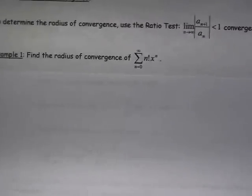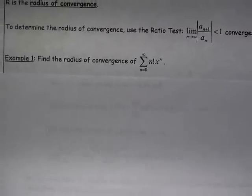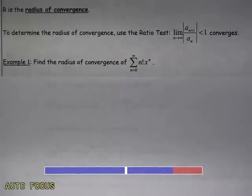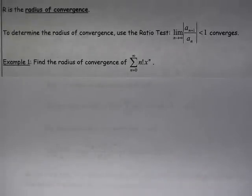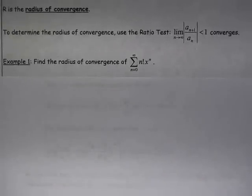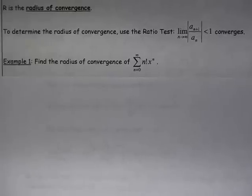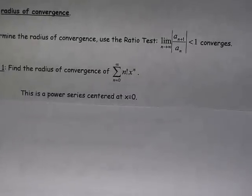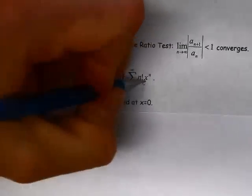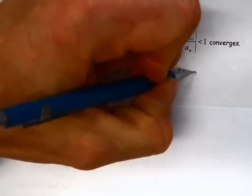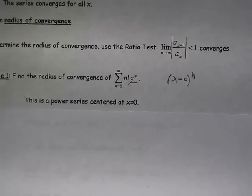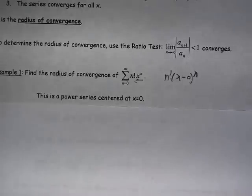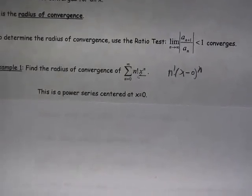Just a straightforward find the radius of convergence of this series. This is a power series here. We have n factorial times x to the n. And what we want to take note of here is this is a power series centered at x equals 0, because this x to the n is really x minus 0 to the n. So these terms are n factorial times x minus 0 to the n, so it's centered at 0.